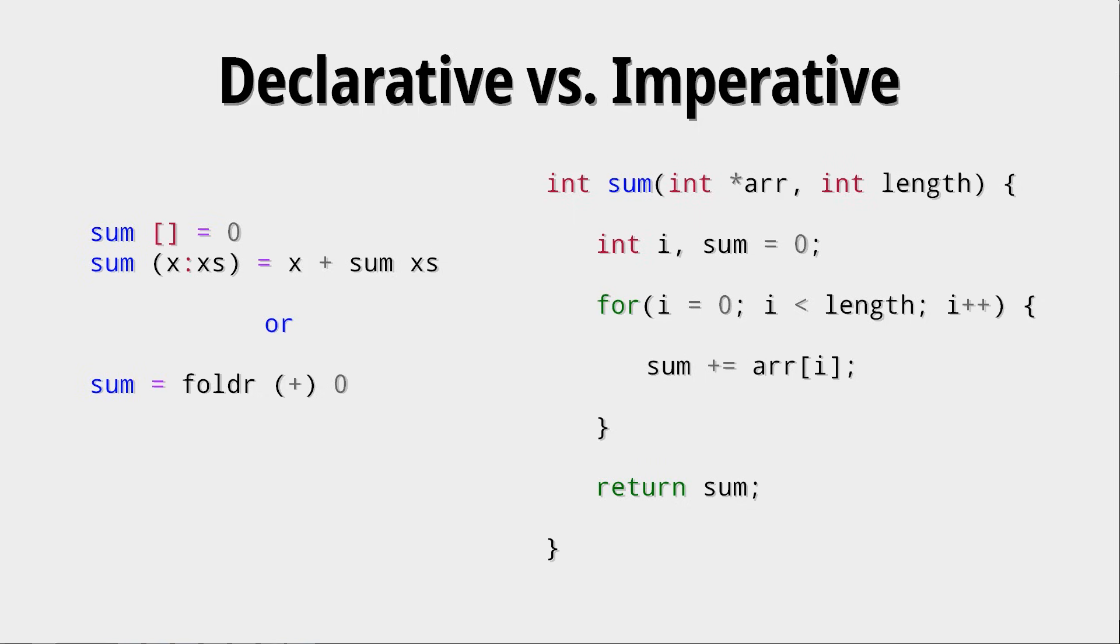And take every single value of that array, which is dependent on this i index, and then add it to the sum. After that, return the sum. What we are doing is not give a definition of what it means to be a sum or what a sum actually is. We just describe an algorithm that can produce a sum.